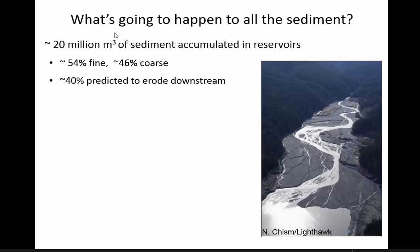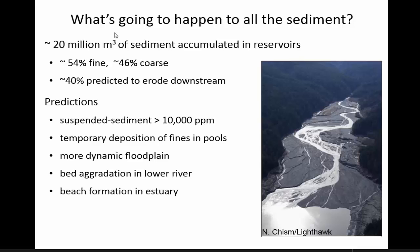The majority of the sediment was finer material — sand or less — with a minority being coarser material. About 40% of it was predicted to erode downstream. This photograph shows what the delta looks like in the upper reservoir. There were a lot of predictions: suspended sediment levels would be really high, there would be temporary deposition of finer material in pools in the main river, there would be connection of the main river with the floodplain as the riverbed built up in grade, and we'd see the establishment of a beach in the estuary.